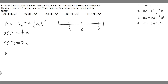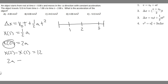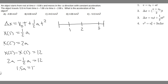Now we know x sub 2 and x sub 1. What do we know about x sub 2 minus x sub 1? We know it equals 12, because that's the distance the object travels between t equals 1 and t equals 2. So plugging in: 2a minus one half a equals 1.5a, and 1.5a equals 12.